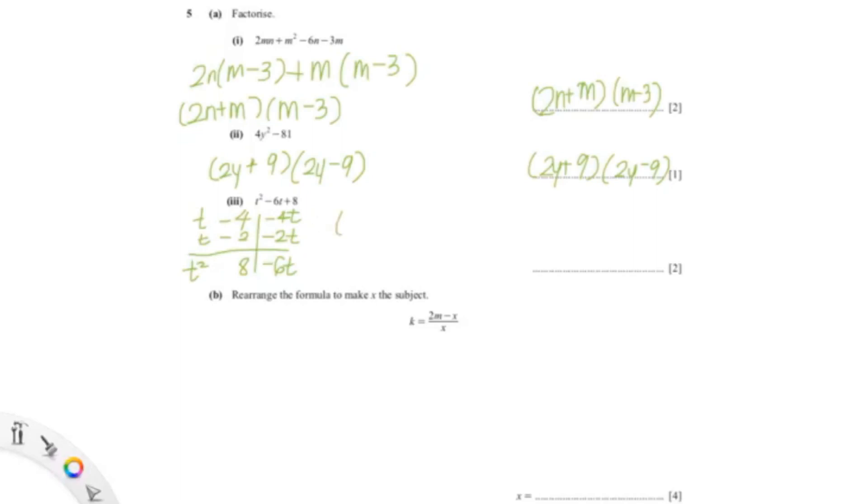So I did that and found the answer. Because -4 plus -2 gives us -6, that will give us (t-4)(t-2). You can check your answers by expanding out the brackets again.